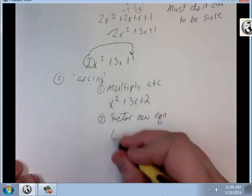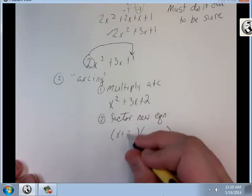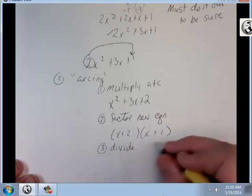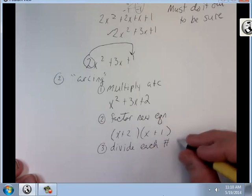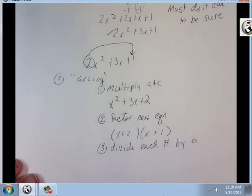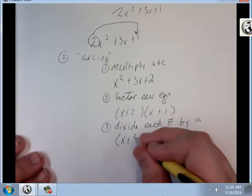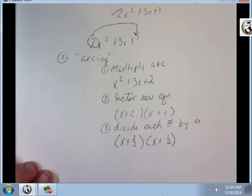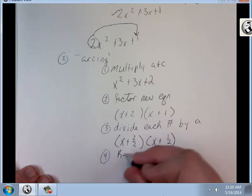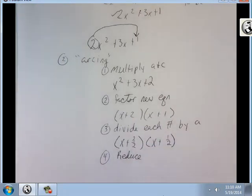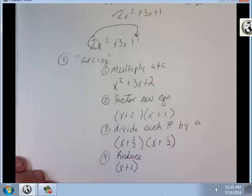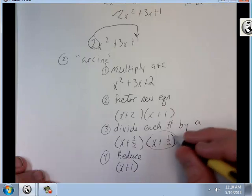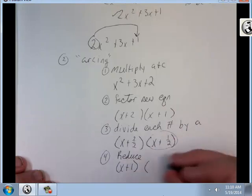And this is one that we had before, it's x plus 2, x plus 1. Now here's the trick. Divide each number by a. So it's going to be x plus 2 over 2 times x plus 1 over 2. Then reduce. Get x plus 1. Now this one, I'm just going to tell you what to do here. Take the denominator, move it in front of x. 2x plus 1.